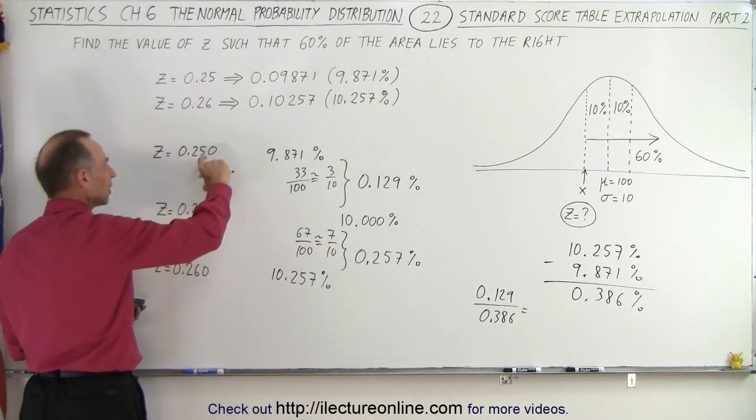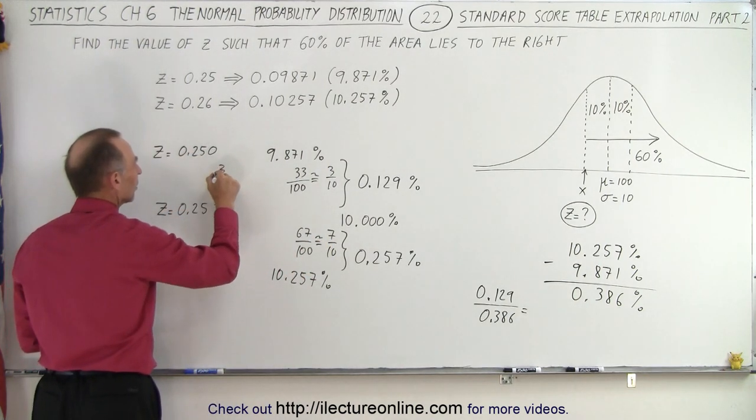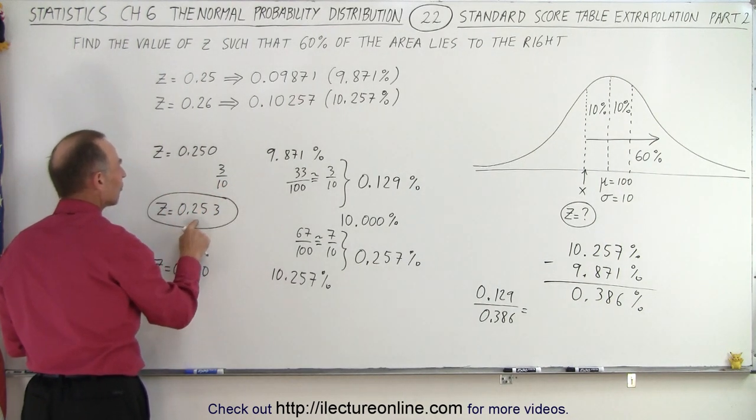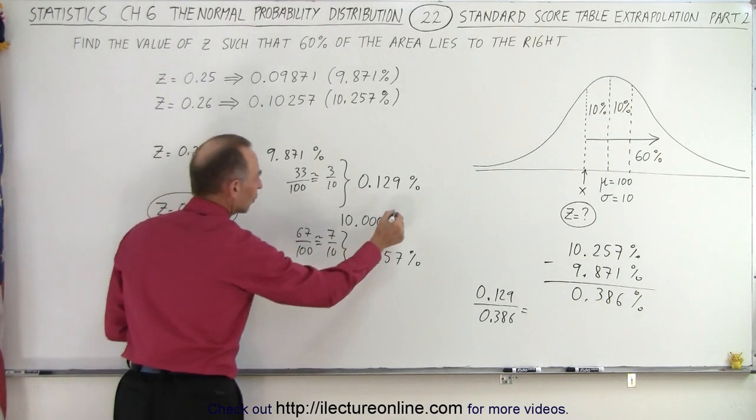So going from there to there should also be 3 tenths the distance. And so this here is the closest value with one more decimal place for the value of z corresponding to an area of 10%.